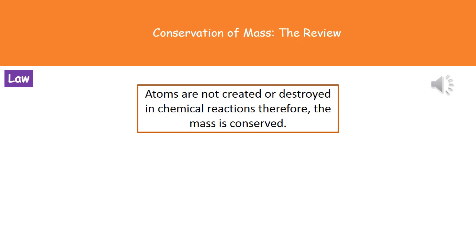What that actually means is that even when a chemical reaction takes place, we're not making new atoms or destroying them in some way. So what that tells us is, however many atoms we start with, we must have in our products as well. The mass of our reactants is going to be the same as the mass of our products.